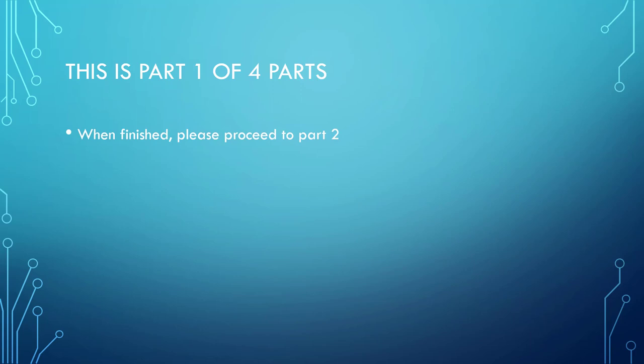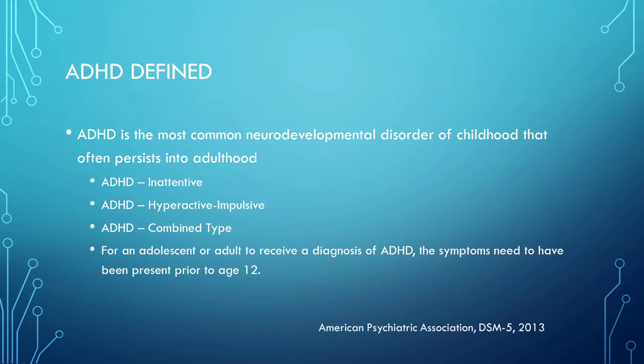ADHD is the most common neurodevelopmental disorder of childhood that often persists into adulthood. There are three types of ADHD: inattentive type primarily, ADHD hyperactive impulsive type, and ADHD combined type.